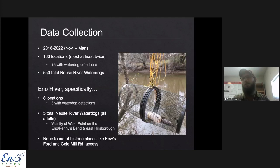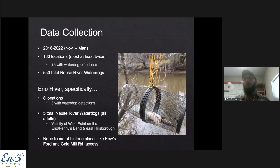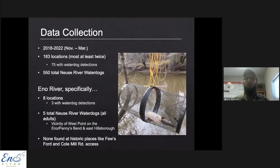I've conducted surveys during the winter survey season when water dogs are more active and breeding - the time when they can be captured using minnow traps. During summer you can't catch them the same way, so there's a very small window of opportunity. Over the last four years I've visited 163 locations, most multiple times, finding water dogs at 75 of those locations and catching 550 total Neuse River water dogs. In the Eno River specifically, I've surveyed eight locations and only found water dogs at three - catching just five adults total in four years, near West Point, Penny's Bend, and a little east of Hillsborough.